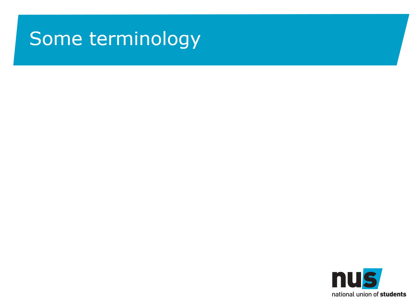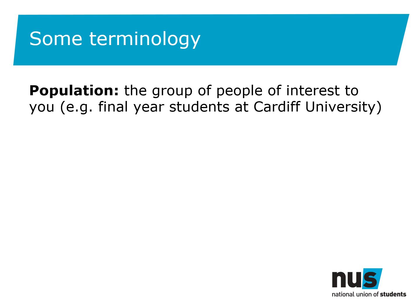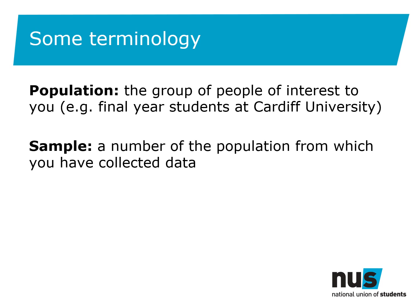Quantitative data analysis uses various terms which I'll explain before we begin. We start off with a population, which is the group of people that are of interest to you. For the NSS, the population is all final year undergraduate students at your university or college, or all final year undergraduates in the UK if you're looking at national data. From this pool of persons of interest we want a sample — these are the people whose data you'll be looking at. In terms of the NSS, this is the people who actually filled in the survey.